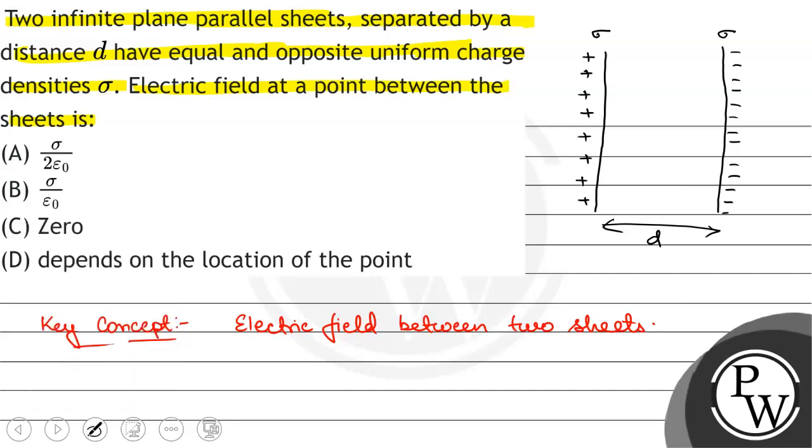Looking at the electric field between the sheets: E1 is the electric field due to the positive sigma, and E2 is the electric field due to the negative sigma. The direction is the same for both, because the positive sheet pushes field lines toward the negative sheet.